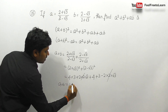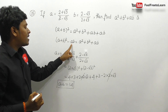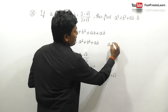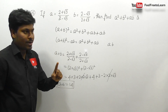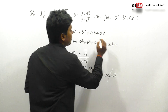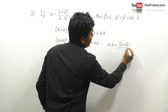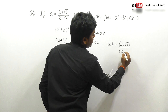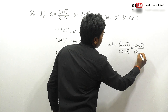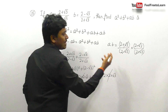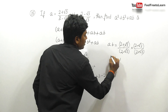So a+b = 14. Next, find ab: a×b = [(2+√3)/(2-√3)] × [(2-√3)/(2+√3)]. We can directly cancel both numerator and denominator terms, so ab = 1.